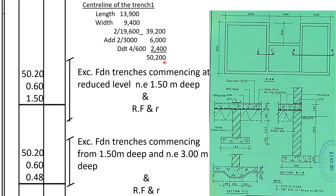So the total center line is 50,200. We come and book 50.2. The width of the trench is 0.6 and the depth is 1.5 for the first stage. Then the second stage: 50.2, width 0.6, depth 0.48.